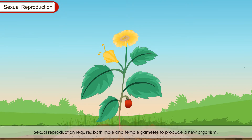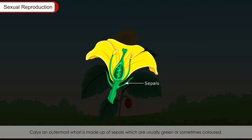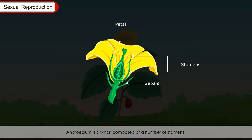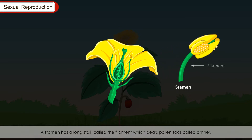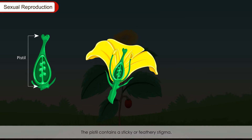Sexual Reproduction: Sexual reproduction requires both male and female gametes to produce a new organism. Plants mostly reproduce by sexual reproduction, and the flower carries out the function of reproduction. It is made up of four whorls: Calyx, the outermost whorl made up of sepals which are usually green; Corolla, the next whorl containing bright and colourful petals; Androecium, a whorl composed of stamens — the male reproductive organs — each having a filament bearing pollen sacs called anthers filled with pollen grains; and Gynoecium, the female reproductive part made up of pistils containing a sticky stigma, a tubular style and an ovary with ovules.